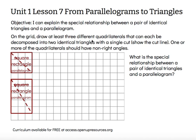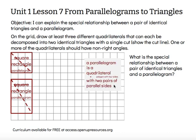Now I'm going to satisfy that last requirement — a quadrilateral with non-right angles. So I'm going to make a parallelogram that's not a square and not a rectangle. A parallelogram is a quadrilateral with two pairs of parallel sides. Notice it says nothing about the angles, so we don't have to worry about 90-degree angles.